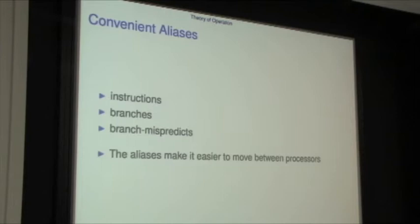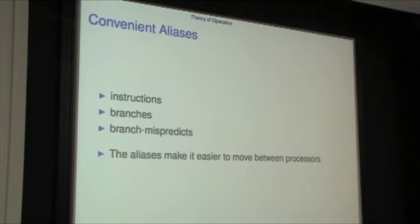There are instructions, branches, branch mispredicts — about ten of these aliases. All the caching stuff really matters. The aliases make it easier to move between processors. I've been writing scripts to run long programs for many hours and measure them completely. It would be nice if, for instance, I go from a MIPS 24K to a MIPS 34K, I don't have to have a version of the script that knows what my processor is. That's why we have these aliases.